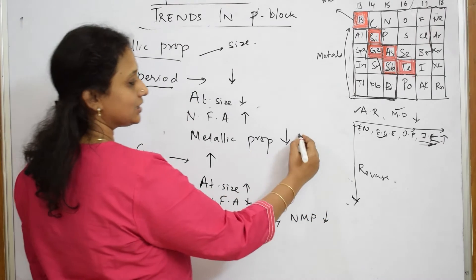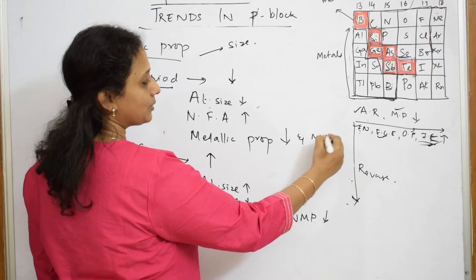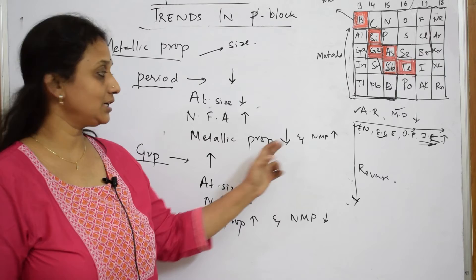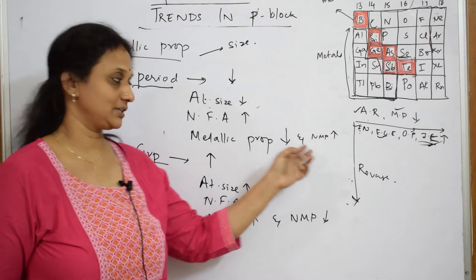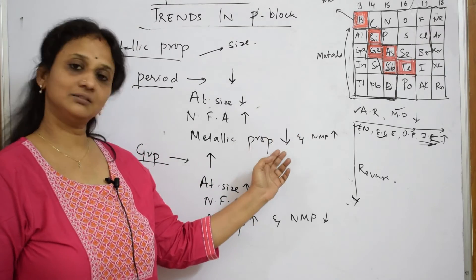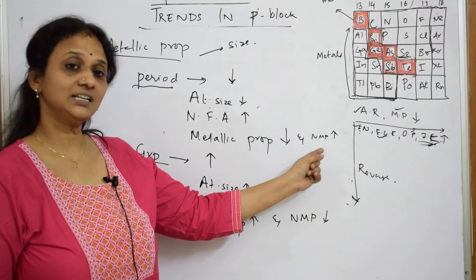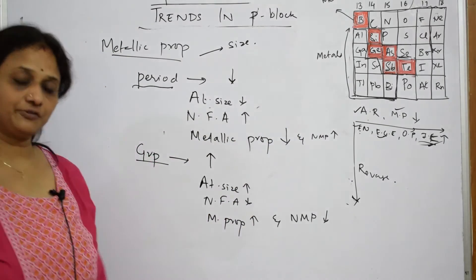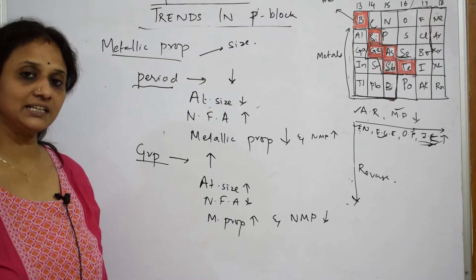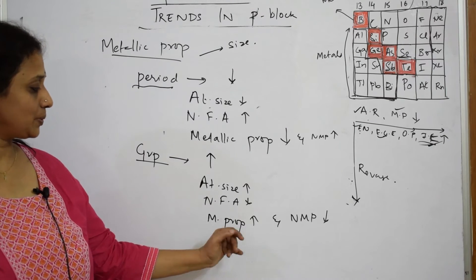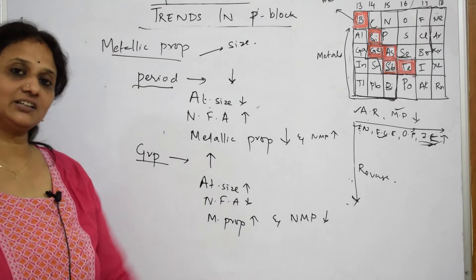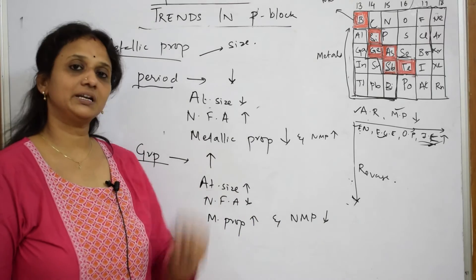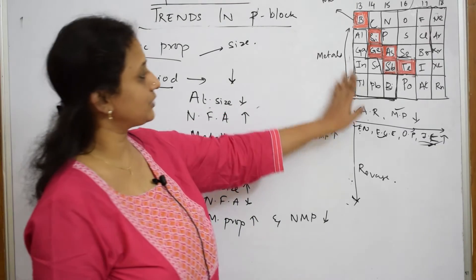From left to right in a period, the element can't donate electrons — it can accept them, because the nuclear force of attraction is trying to pull the electron. In a group, with larger atomic size, it can easily release and donate that electron. Hence, metallic property increases and non-metallic property decreases — that is what I have written.